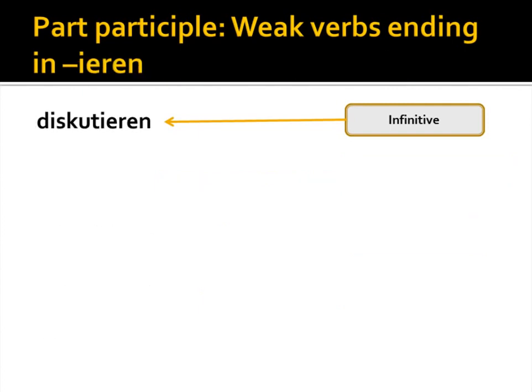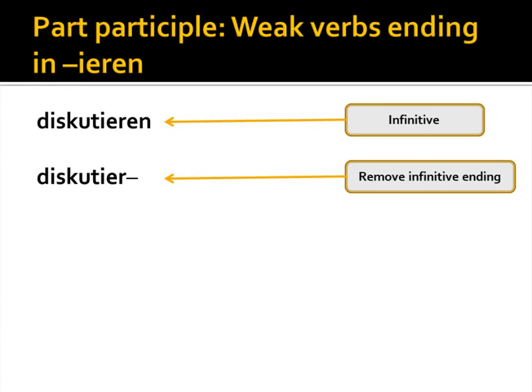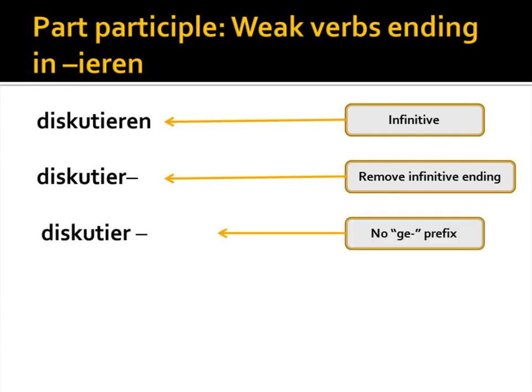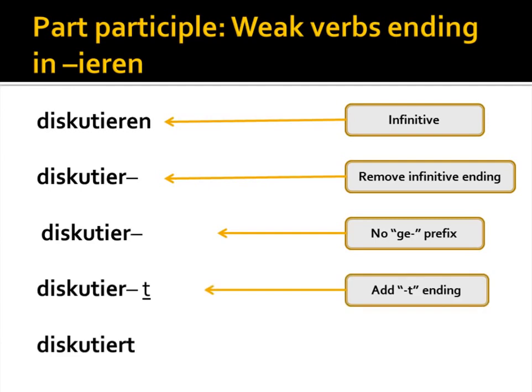Finally, we have some weak verbs that end in -ieren, like diskutieren, meaning 'to discuss.' Again we start the same way by removing the infinitive ending. However, we diverge slightly — we do not add a ge- prefix. Instead, we simply add a -t ending, giving us the past participle diskutiert.